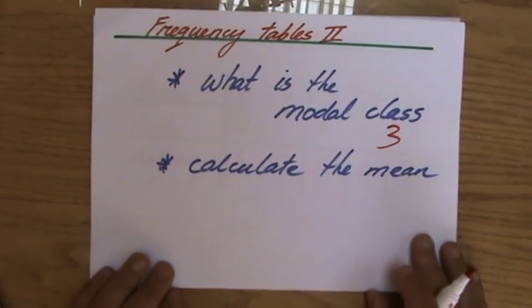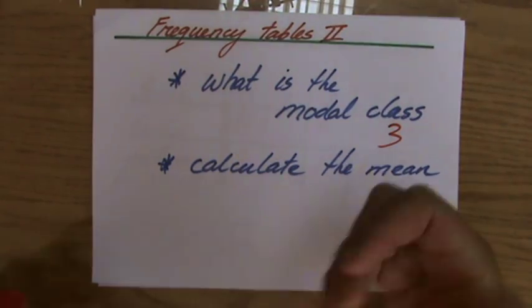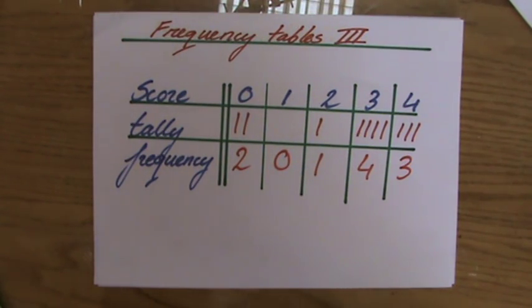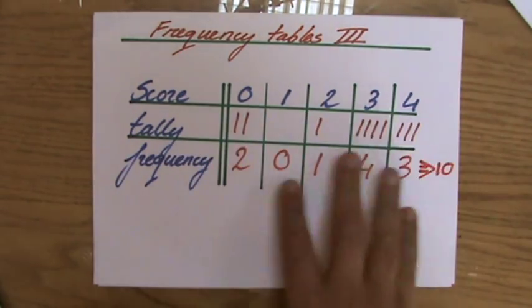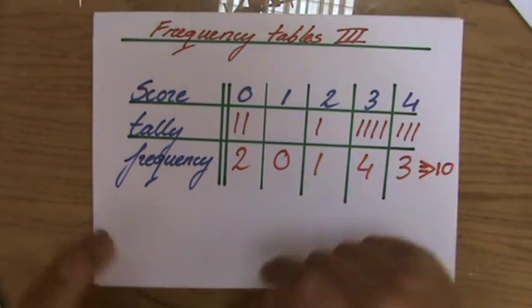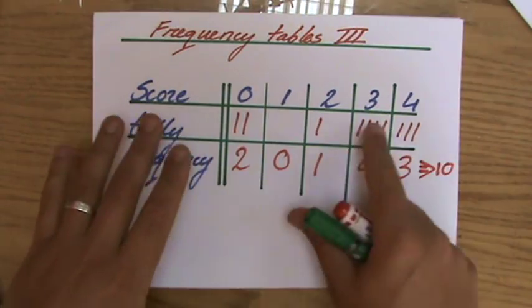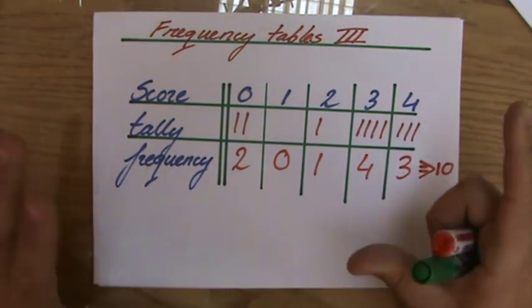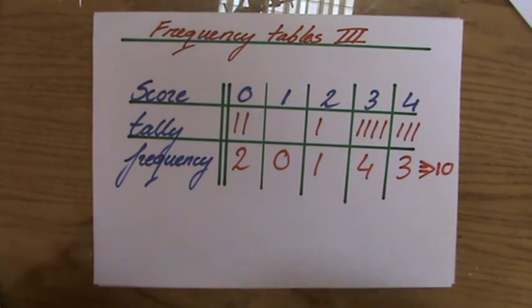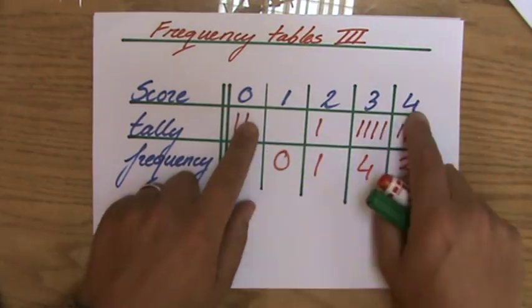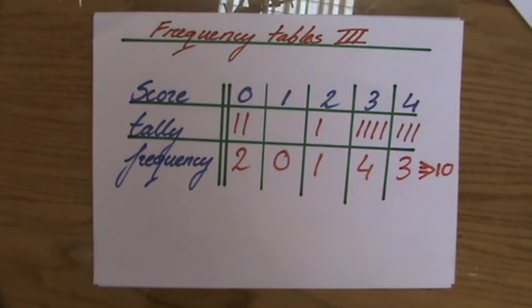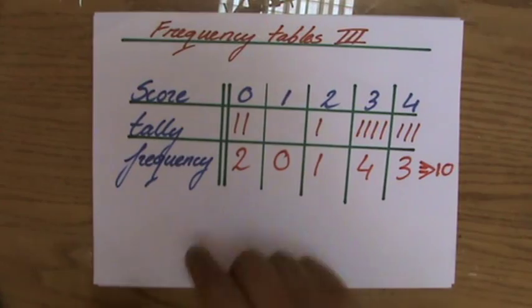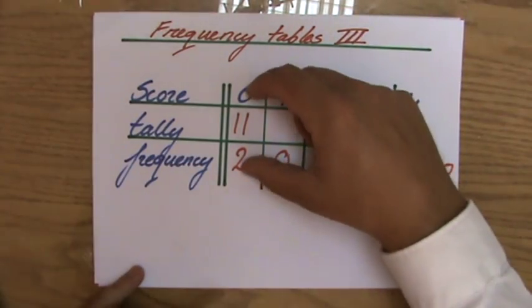The second question: calculate the mean. As you know, the mean is the sum of all the values divided by the amount of values. I asked 10 people. Just by looking at the scores, if I had to estimate the mean, I'd say maybe two and a half or so. The mean needs to be between zero and four — it cannot be less than zero or more than four.